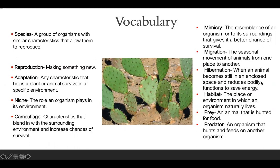Migration: the seasonal movement of animals from one place to another. Hibernation: when an animal becomes still in an enclosed space and reduces bodily functions to save energy. Habitat: the place or environment in which an organism naturally lives. Prey: an animal that is hunted for food. And predator: an organism that hunts and feeds on other organisms.